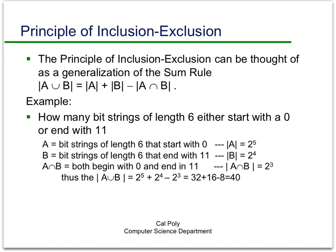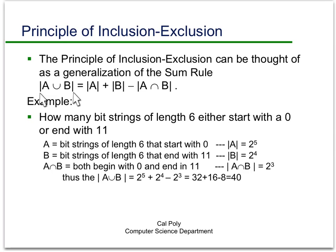The final basic principle is the principle of inclusion-exclusion. This is a generalization of the sum rule. The cardinality of A union B is equal to the cardinality of A plus the cardinality of B minus the cardinality of A intersection B. The reason is that elements in A intersection B are being double-counted — once when we count the cardinality of A and once when we count the cardinality of B.